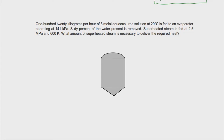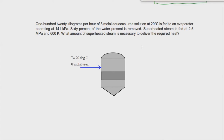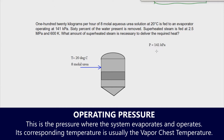This is our evaporator with all the necessary labels. We have 120 kilograms per hour of 8 molar aqueous urea solution as our heat exchange inlet, operating at a pressure of 141 kilopascal. When we talk about this operating pressure, that's actually the pressure of the system.